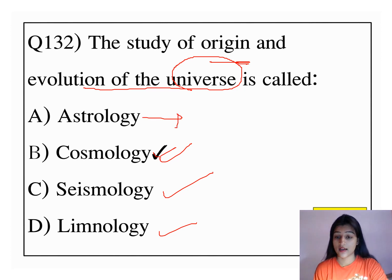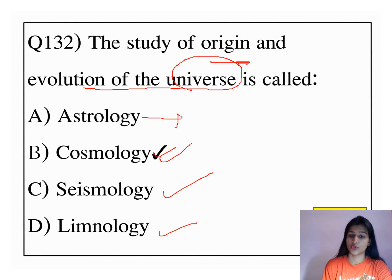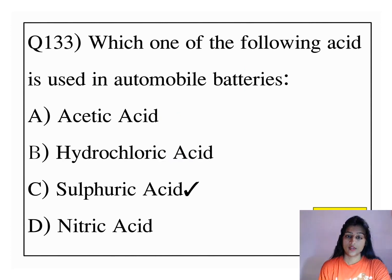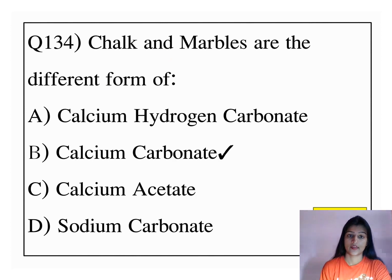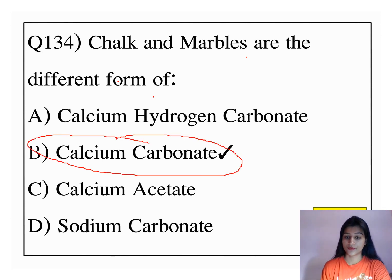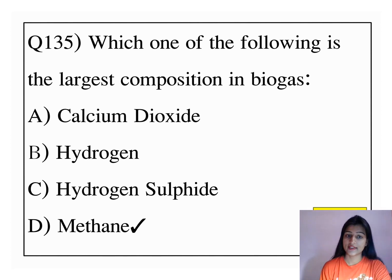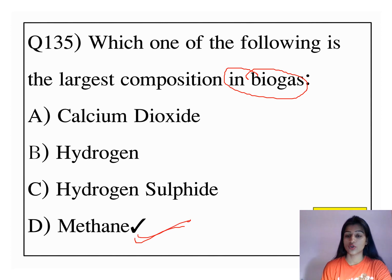Astrology is the study of stars, such as horoscopes and all. Which one of the following acid is used in automobile batteries? The answer is sulfuric acid. Chalk and marble are different forms of calcium carbonate. Which one of the following is the largest composition in biogas? The answer is methane.